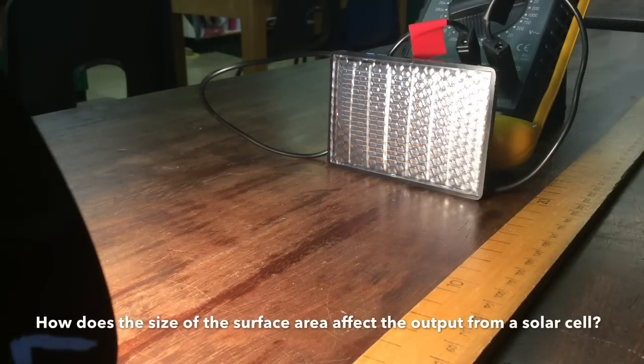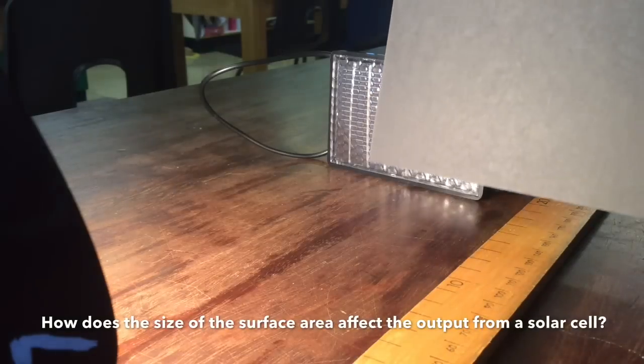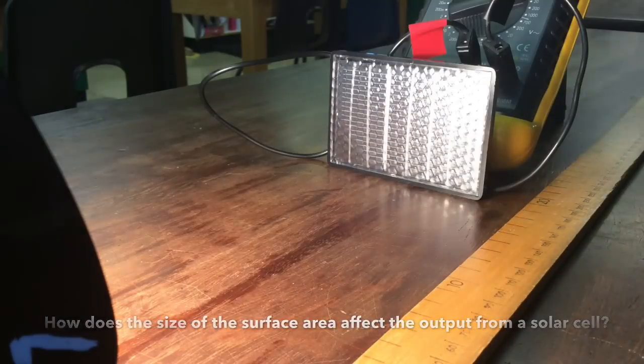Once you've completed that experiment, investigate how the area of the solar cell exposed to light affects the voltage across that solar cell.